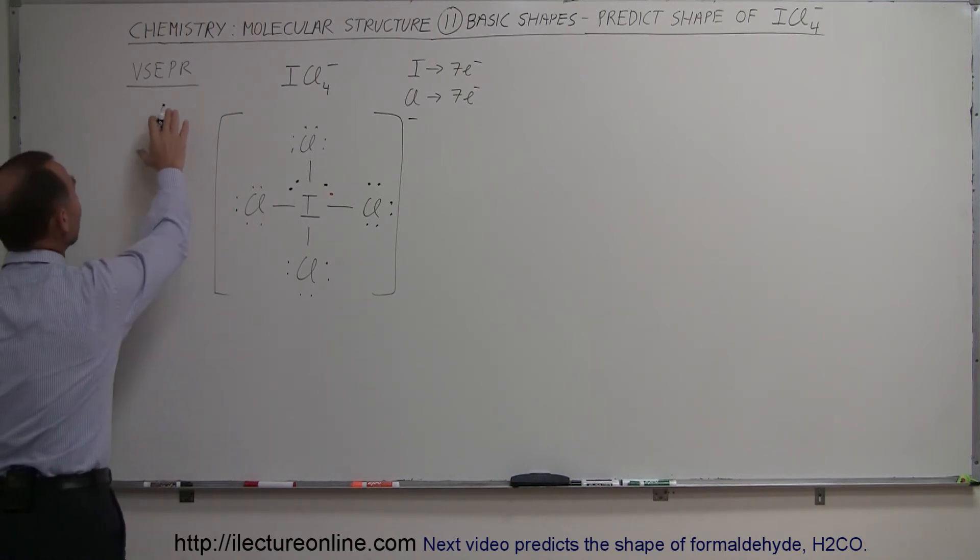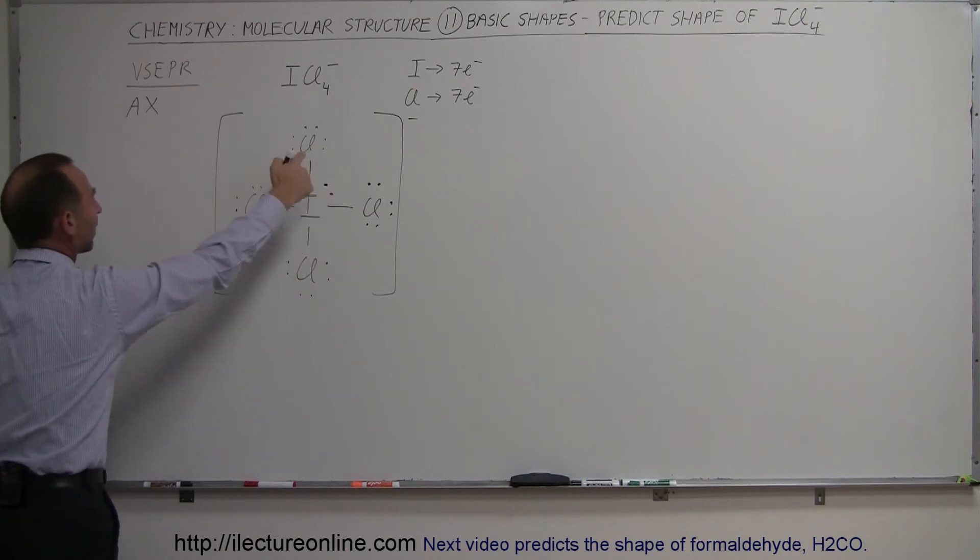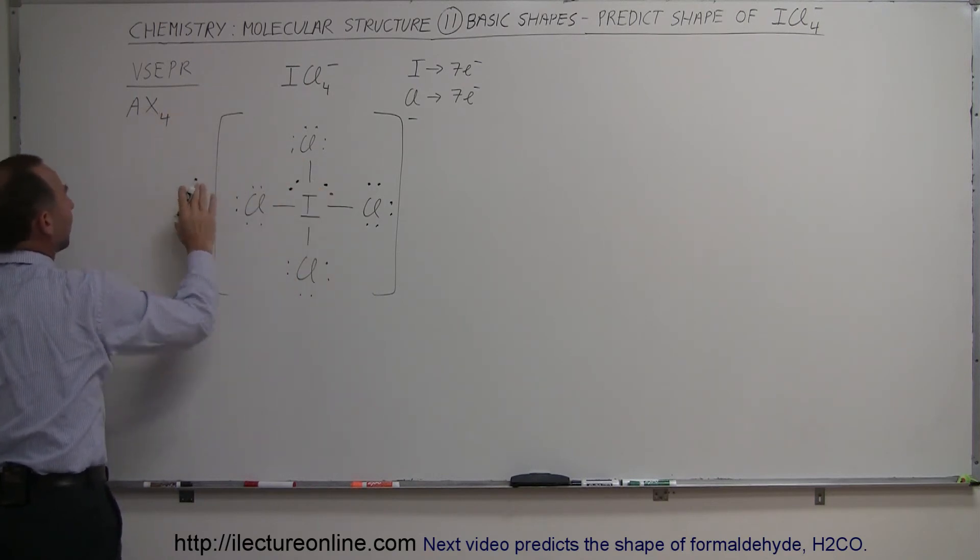Now notice that I put it in the VSEPR notation. We have one central atom, we have four atoms on the outside, and we have now two free electron pairs.